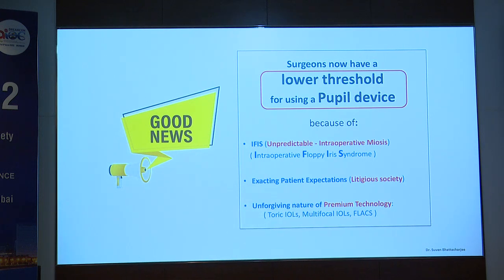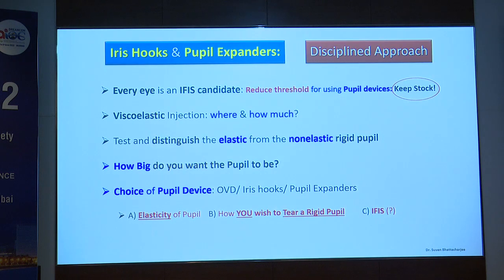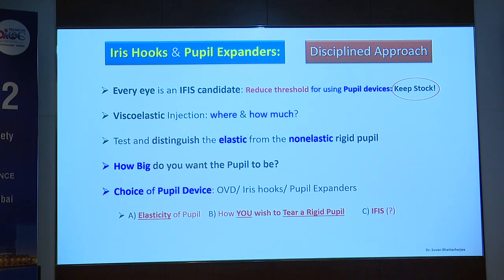There is a large list of drugs — not just Tamsulosin — that can cause IFIS, including antihypertensives. A large Indian study showed hypertension was a very significant risk factor. Intraoperative myosis is unpredictable. Surgeons are slowly reducing the threshold and keeping backup devices in the theater because of unpredictability of IFIS, exacting patient expectations, and the unforgiving nature of premium IOLs. A disciplined approach is important — treat every eye as a potential IFIS candidate. Keep a stock of devices to boost your confidence level.